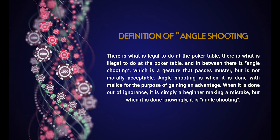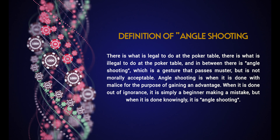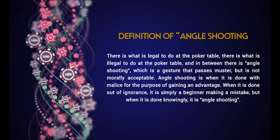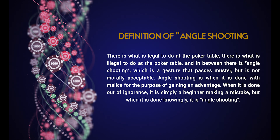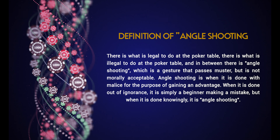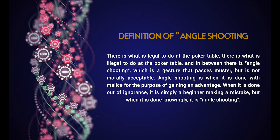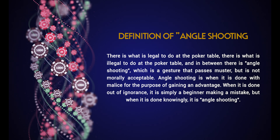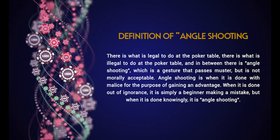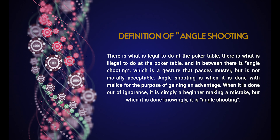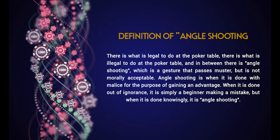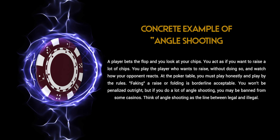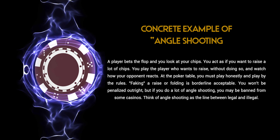Definition of angle shooting: there is what is legal to do at the poker table, there is what is illegal to do at the poker table, and in between there is angle shooting — a gesture that passes muster but is not morally acceptable. Angle shooting is done with malice for the purpose of gaining an advantage. When done out of ignorance, it is simply a beginner making a mistake, but when done knowingly, it is angle shooting.